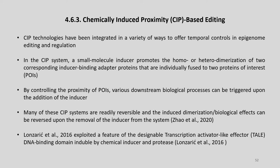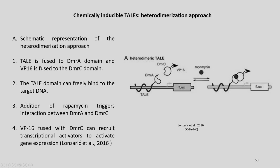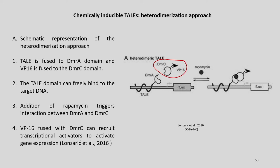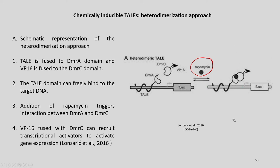Lüneburg and his group explored the designable transcription activator-like effector DNA binding domain inducible by chemical inducer and protease. These are called chemically inducible TALs, and here the hetero-dimerization approach is followed. You can see here the TAL bound to FKBP12 and FRB bound to VP16. In the presence of rapamycin, FKBP12-TAL and FRB-VP16 dimerize, and some transcriptional effect results from this dimerization.